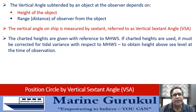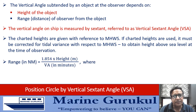The charted heights are given with reference to mean high water spring. If charted heights are used, they must be corrected for the tidal variance with respect to mean high water spring so as to obtain the height of the object above sea level at the time of observation. Range of the observer from the object in nautical miles can then be obtained by this formula: 1.854 multiplied by height of the object in meters, divided by vertical angle in minutes.